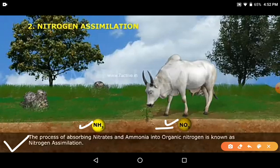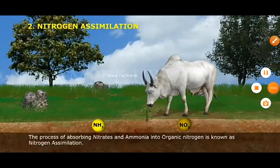Note down both definitions and learn whichever is easier. Nitrogen passes from plants to herbivores that eat them, and then to carnivores that eat herbivores. The protein made in plants — for example, protein from dal — enters the body of herbivores when they eat plants. And carnivores get this protein when they eat herbivores. This is nitrogen assimilation. The next step is ammonification.